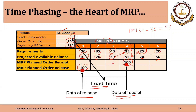This is the basic idea of lead time offset, which is also sometimes called backward planning, because we are starting with when the items will be required and placing the order in the earlier period to meet that requirement. This is the core of MRP — the time phase — where we offset the time as per the requirements of the item in a certain period.